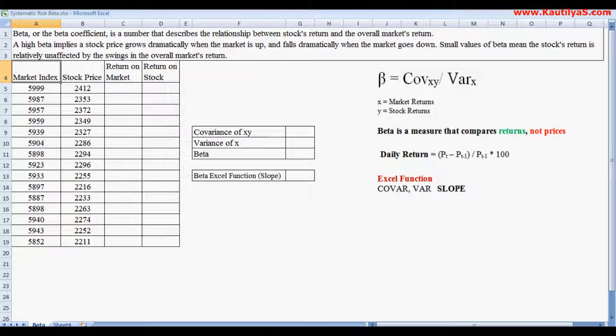Now we will see how to calculate beta using Excel. The equation for beta calculation is beta equals covariance of XY divided by variance of X. X here is market returns and Y is stock returns.